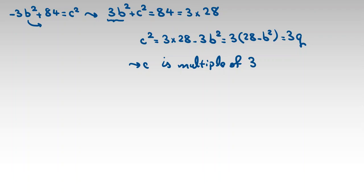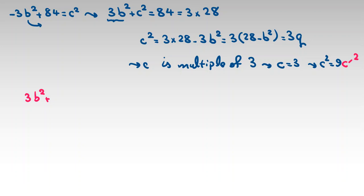Let c = 3c′. Then c squared = 9c′ squared. Substituting into 3b squared plus 9c′ squared equals 84, and dividing both sides by 3, we get b squared plus 3c′ squared equals 28.